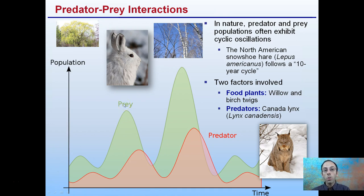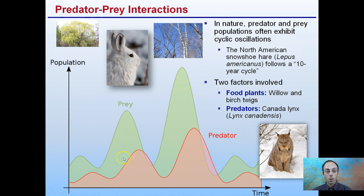Prey can increase for two different main reasons. One is food — food availability to the prey could increase, in this case willow trees and birch twigs, which can help increase the prey. It could also be a change in the predator population, in this case the Canadian lynx being at a lower level. However, this could be a reduction in food, or more likely based on this data, an increase in the amount of lynx present. We can see that delay occurring — the prey starts to increase, there's a delay, and the predators will also increase. It's this cyclic oscillation occurring in the populations of the snowshoe hare and Canadian lynx.